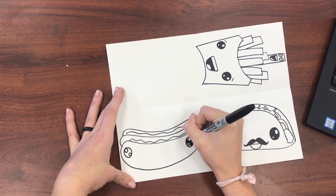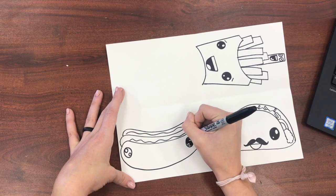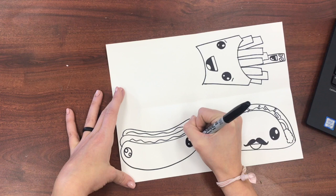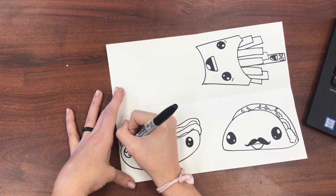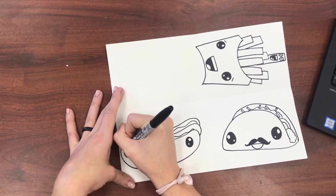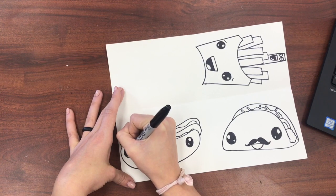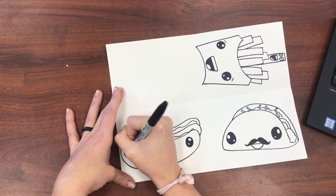I'm drawing two small circles inside of my eyes and I'm going to leave those white. When you go back over with sharpie you can color the background in so that that stays black and the tiny dots stay white. That's kind of like the glimmer in our hot dog's eye.